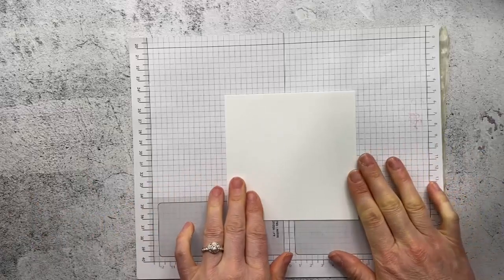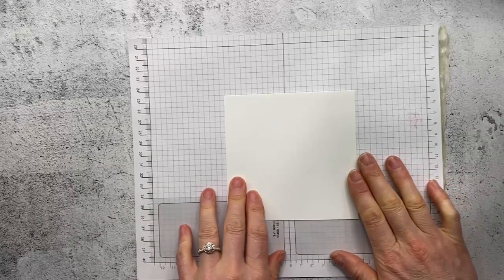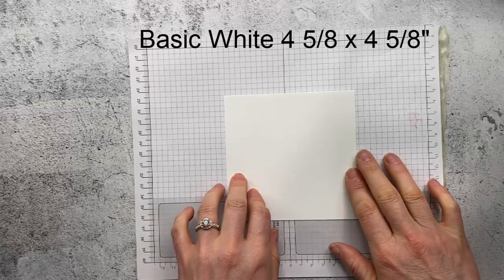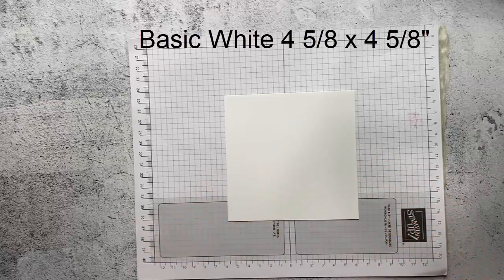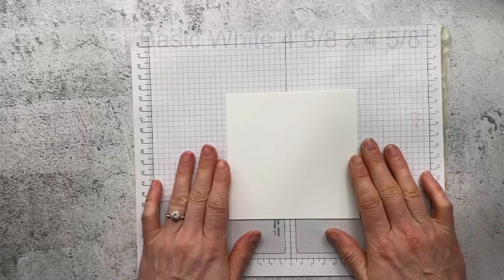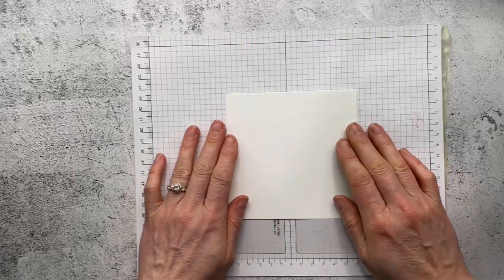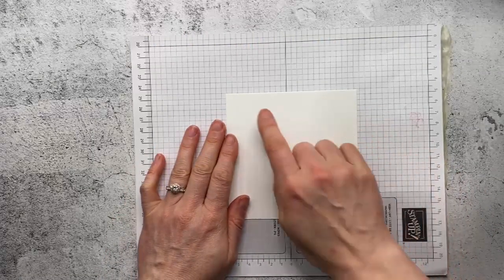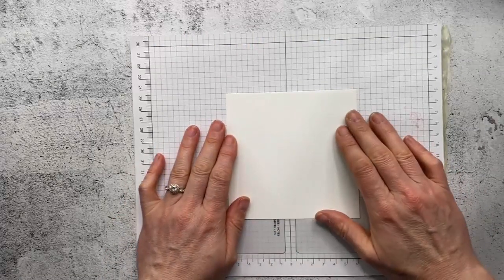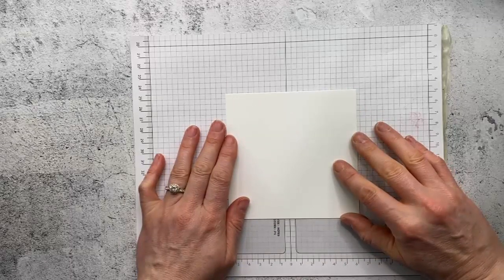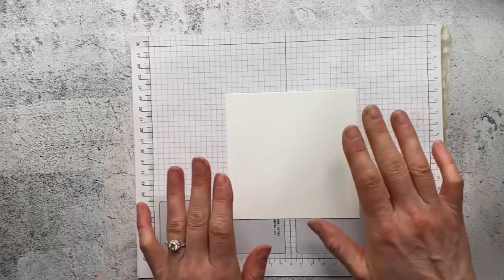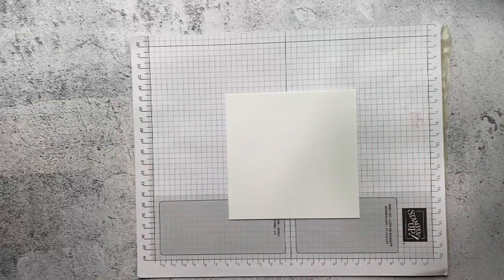So we're starting with a piece of basic white and this is cut at four and five eighths by four and five eighths square and we're going to do a little bit of masking. You'll want to use grid paper so that you can be sure that your paper is straight so when you put on your mask they're also straight and your inked portions are not going at an angle.